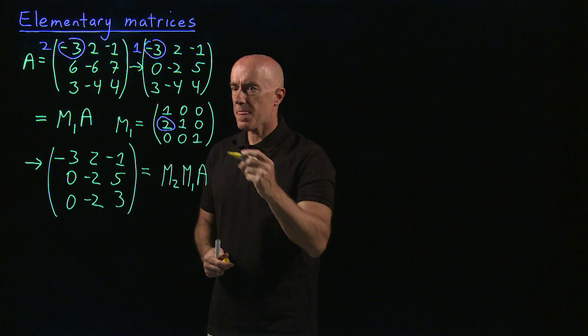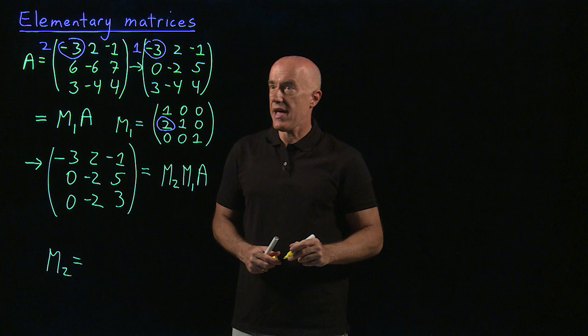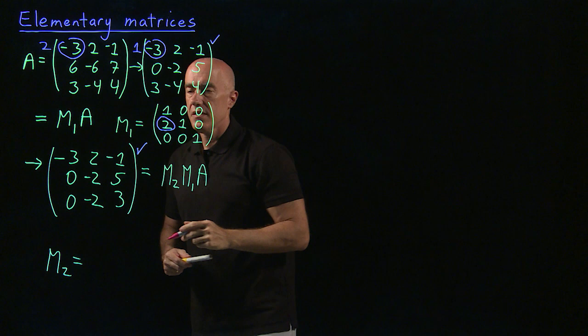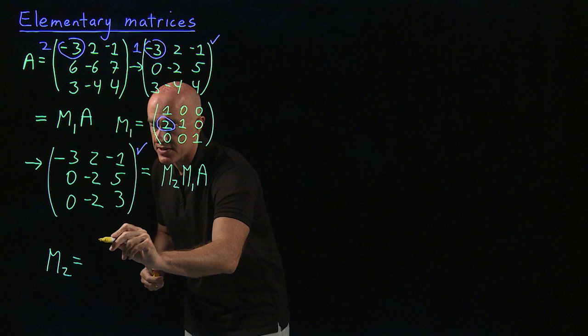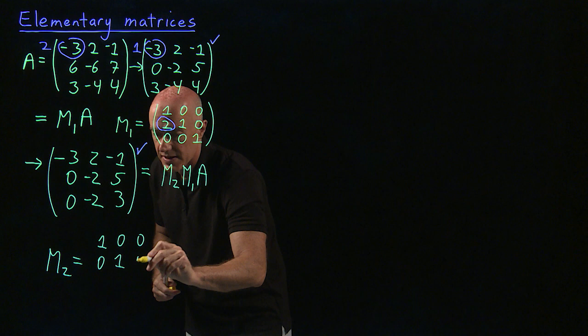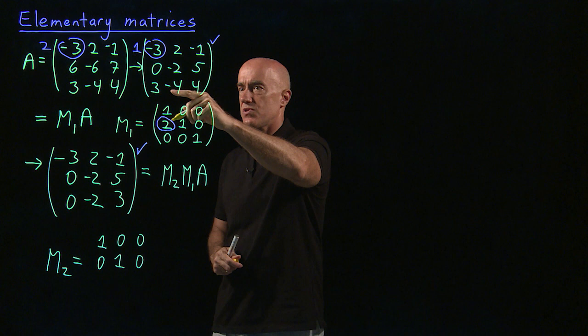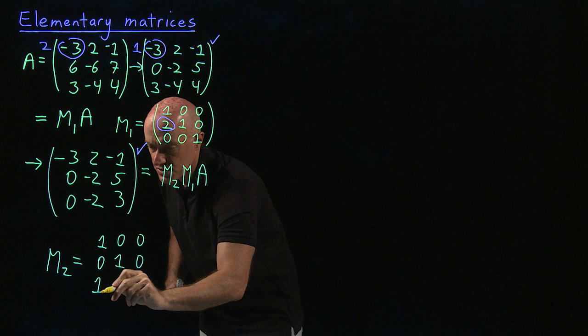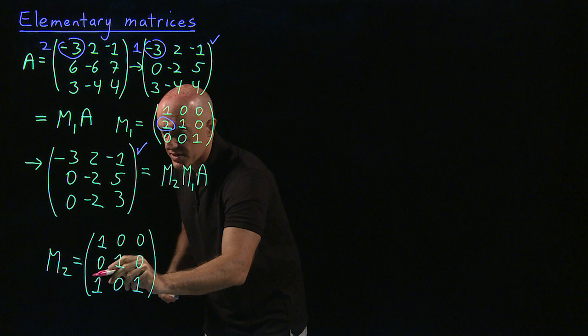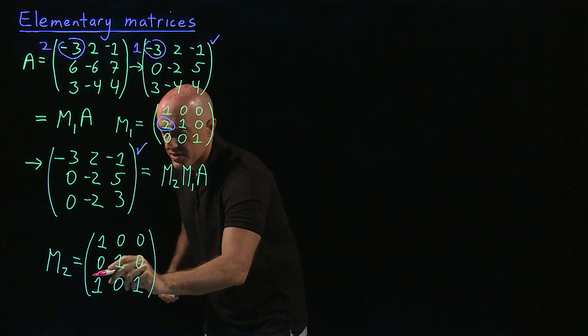What is M2? The first row stays the same, so that's the first row of the identity matrix. The second row also stays the same — the second row of the identity matrix. The third row was obtained by multiplying the first row by one and adding it to the third row. So M2 is the identity matrix with one additional value — one zero in the identity matrix changed to a one.